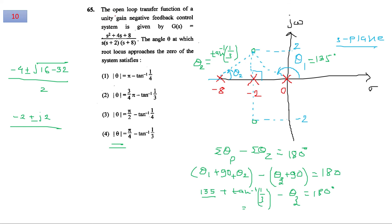Moving on to question number 10, the open loop transfer function of a unity gain negative feedback control system is given. We have to find the angle theta at which the root locus approaches the zero of the system. To solve these kinds of problems, we have to first draw the pole zero plot of given system function. There are three poles marked in red and two zeros marked in green. The zero locations are at minus 2 plus minus j2, and the poles are existing at 0, minus 2, and minus 8.